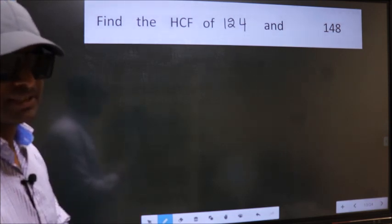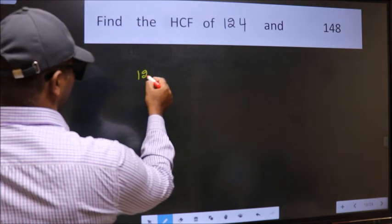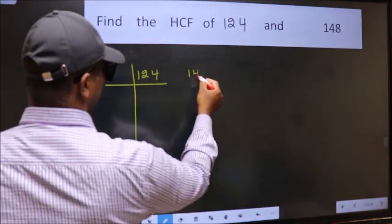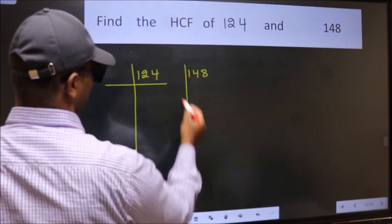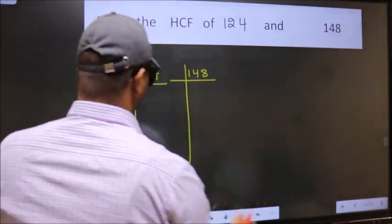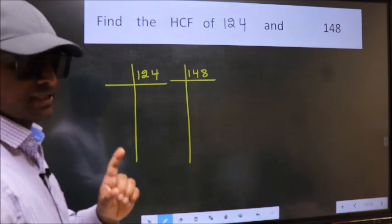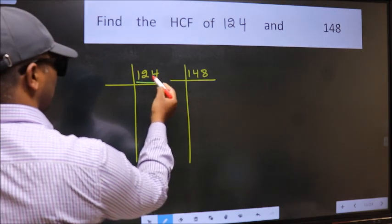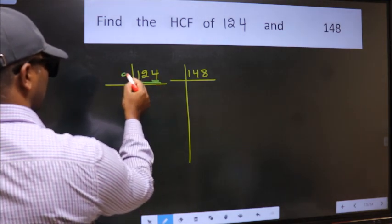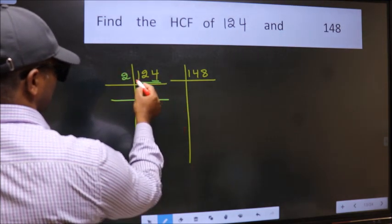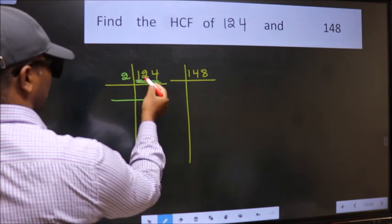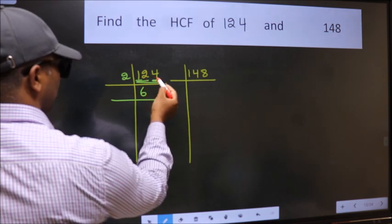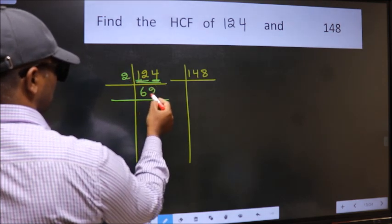What I mean is, take 124 and 148. This is your step 1. In this number, last digit 4 is even, so take 2. First number 1 is smaller than 2, so take two digits, 12. When do we get 12 in 2 table? 2 times 6 is 12. The other number 4, when do we get 4 in 2 table? 2 times 2 is 4.